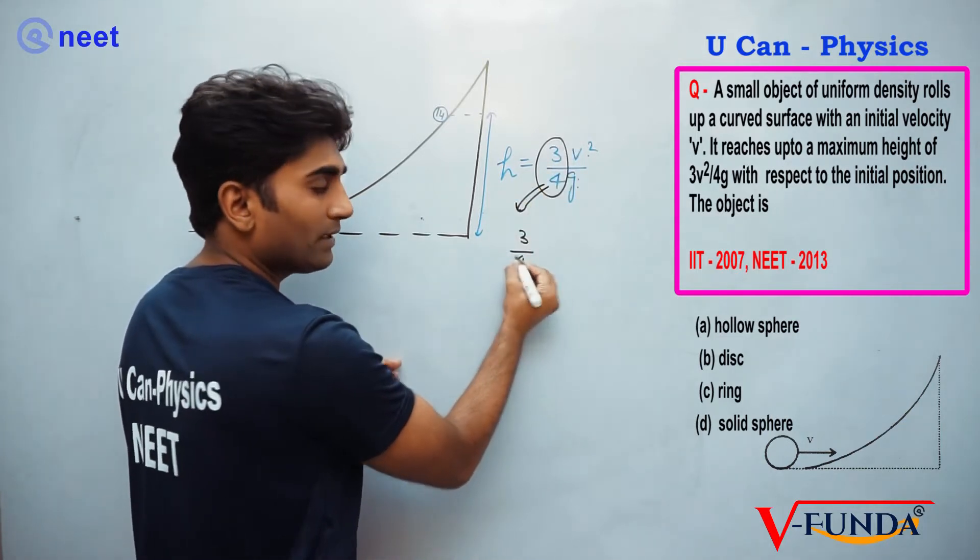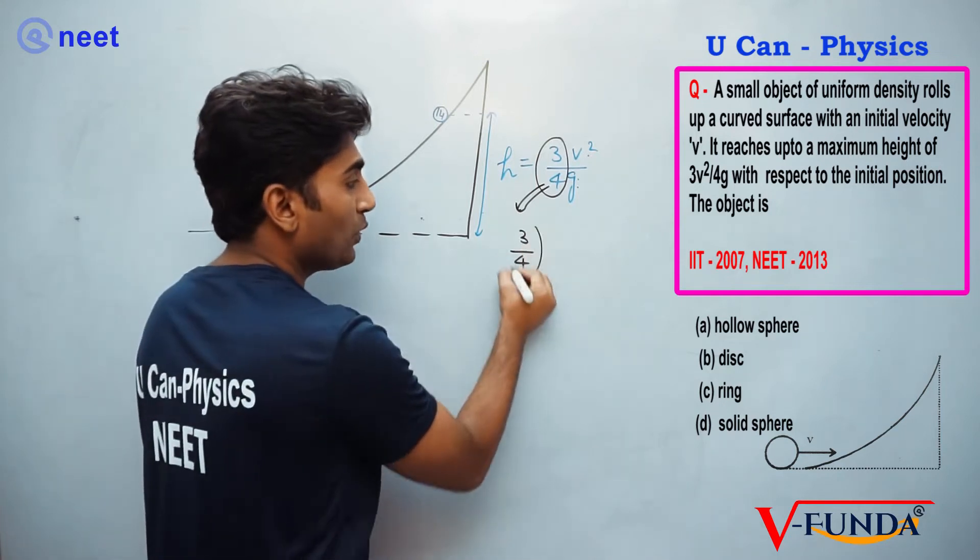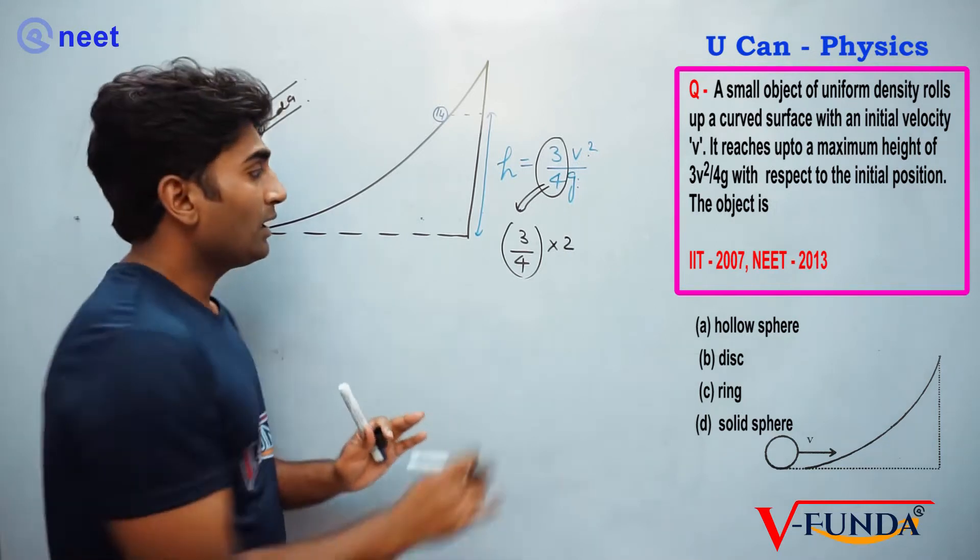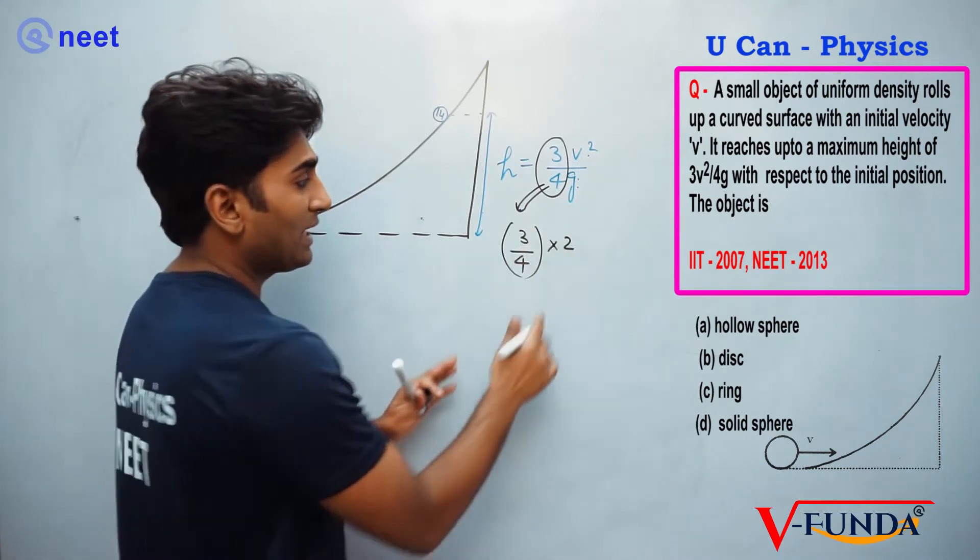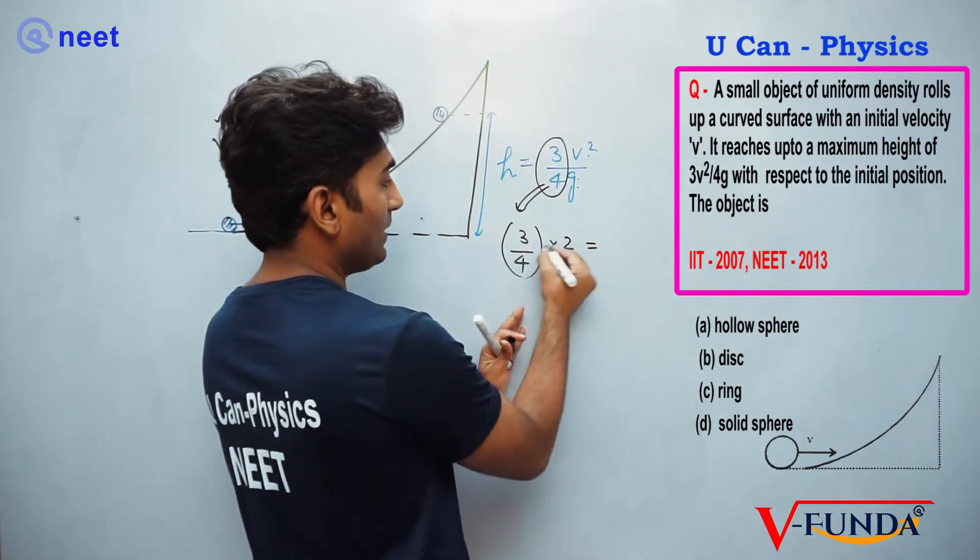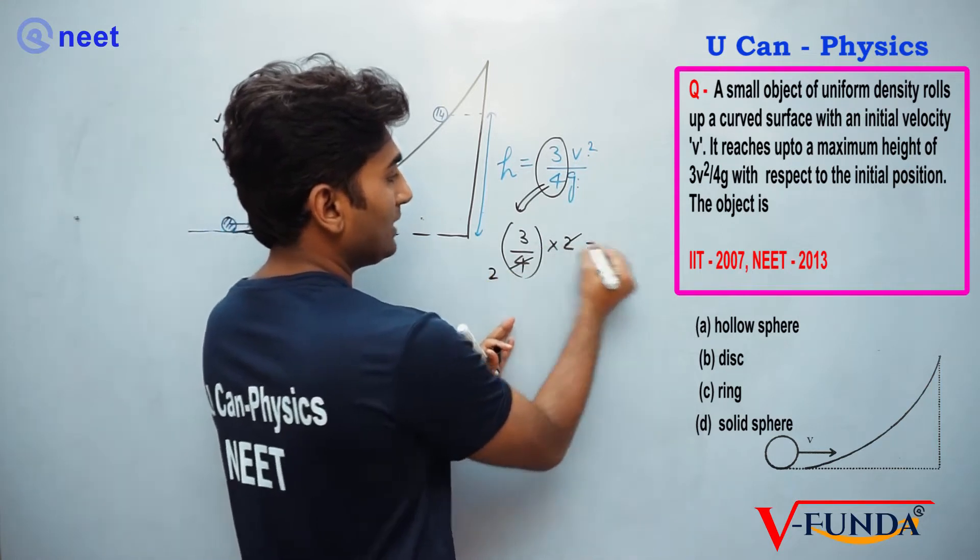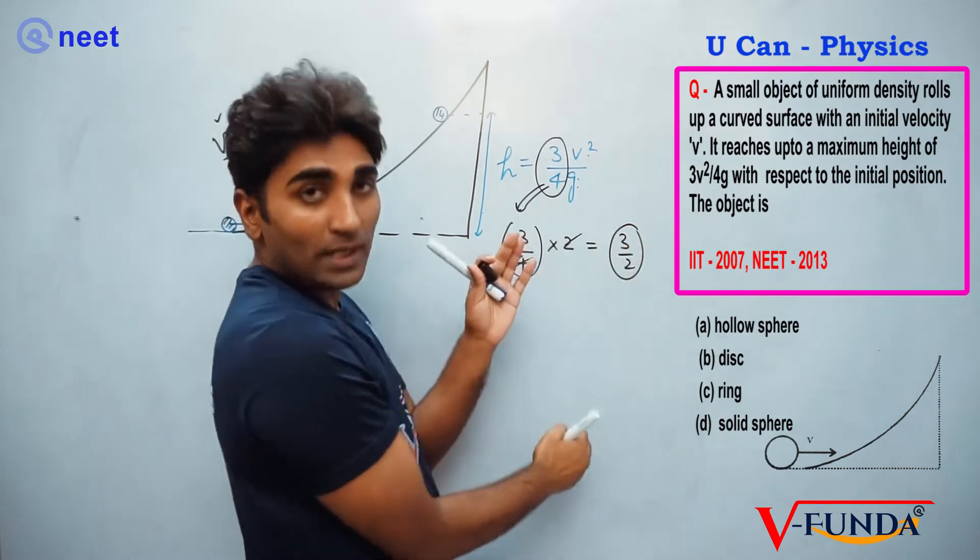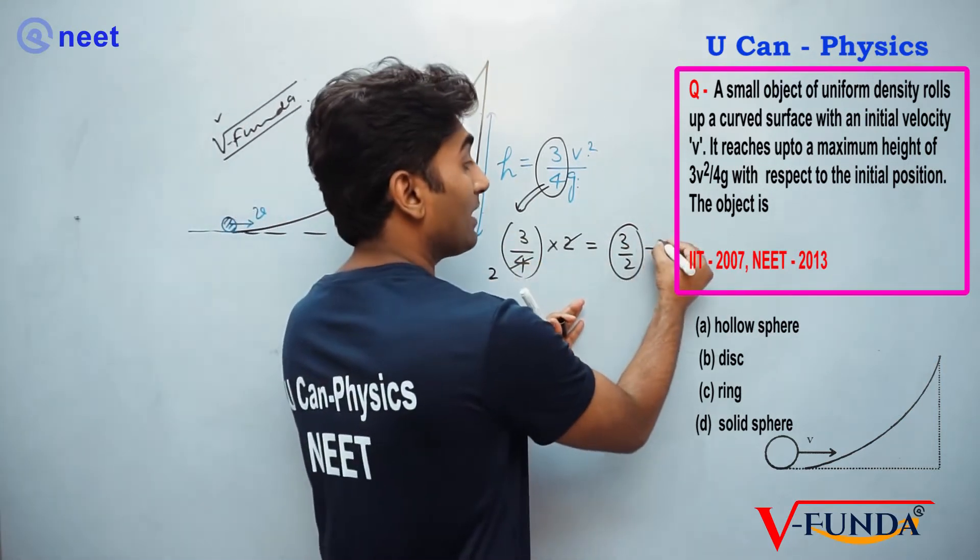That's 3/4. Multiply by 2: 3/4 × 2 = 3/2. Then 1 - 3/2 = 1/2.